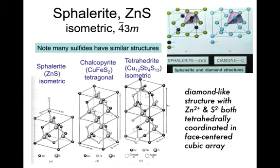An example here is sphalerite, which has the same structure as diamond, with tetrahedrally coordinated carbons — meaning one carbon is bonded to four additional carbons around it in a tetrahedron. In the case of sphalerite, zinc 2+ replaces the central carbon and sulfur 2- replaces the four tetrahedral carbons, giving a zinc sulfide arrangement. Chalcopyrite, the common copper-iron sulfide, looks exactly like sphalerite except every other zinc is replaced alternately by copper and iron — again a one-to-one stoichiometry of metal to sulfur.